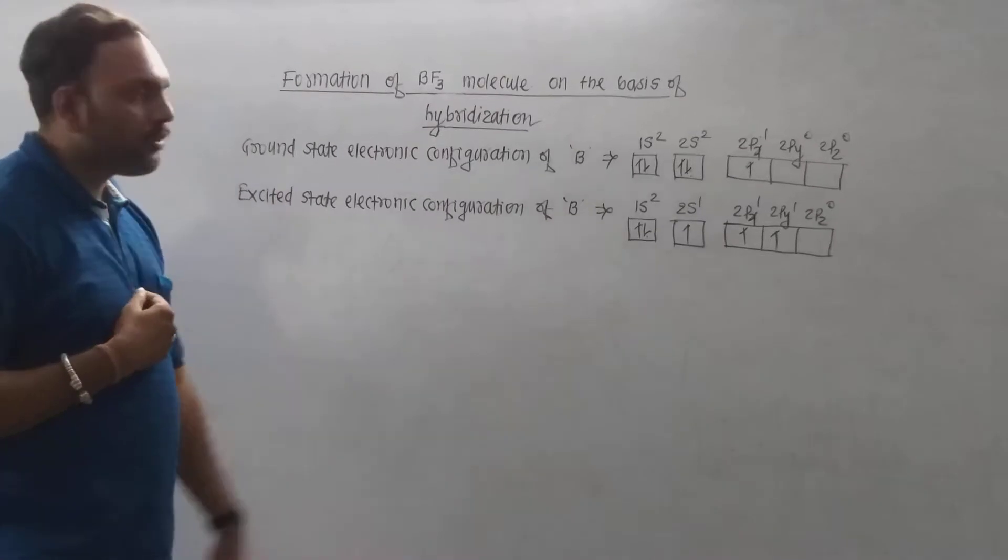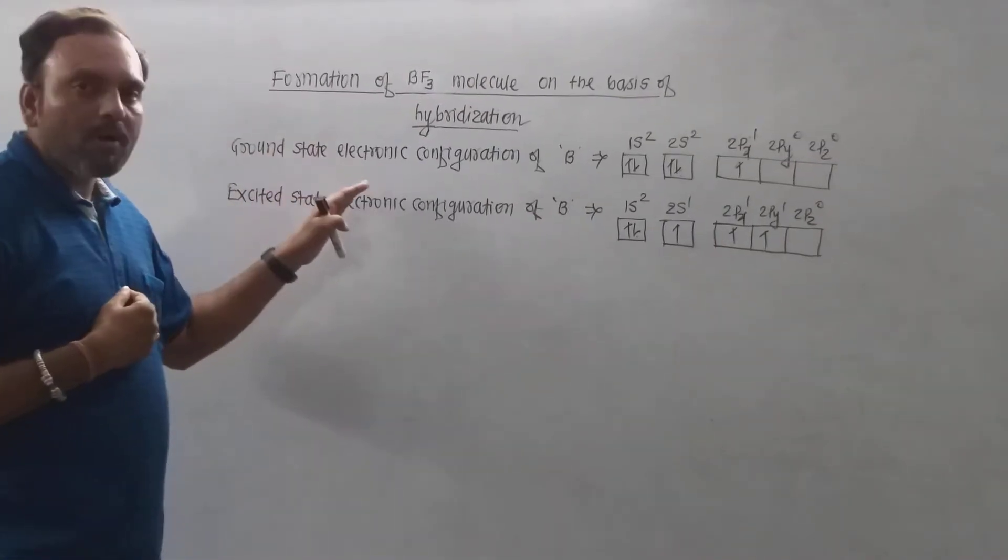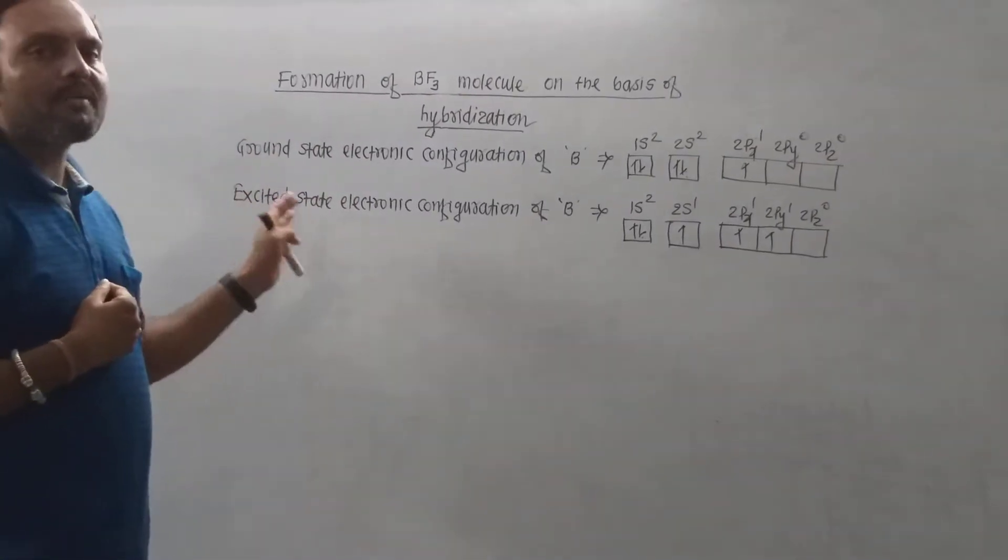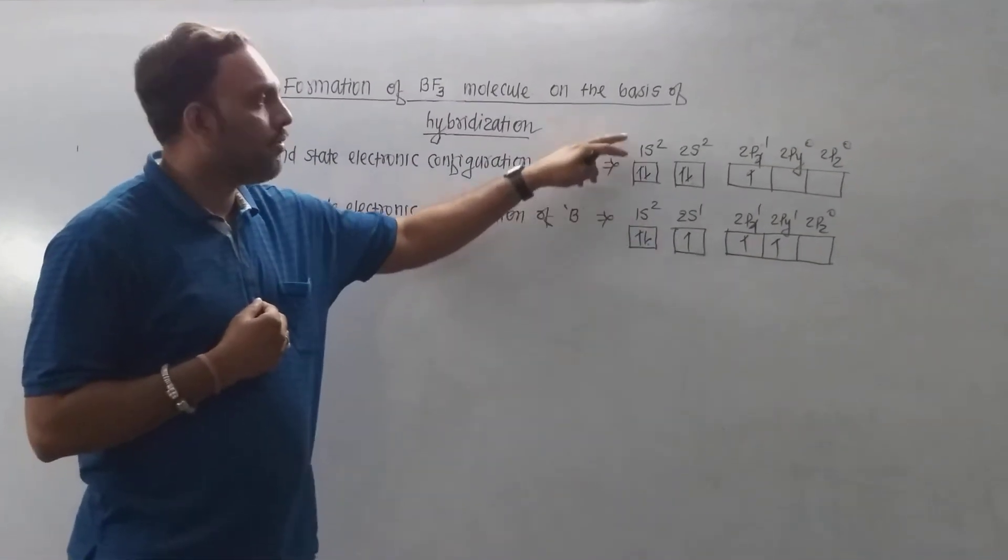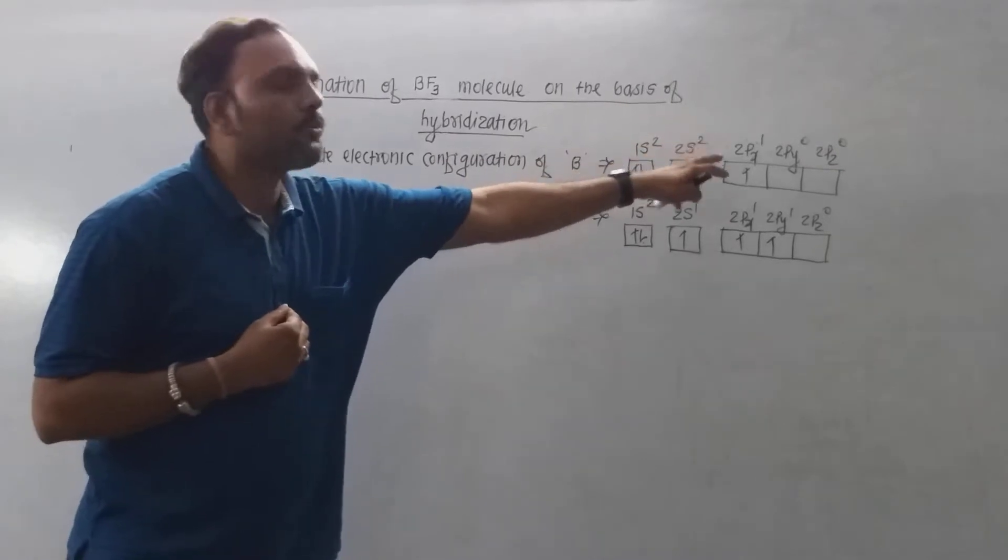In boron trifluoride, the central atom boron has atomic number 5. Its ground state electronic configuration can be given as 1s², 2s², 2p¹.